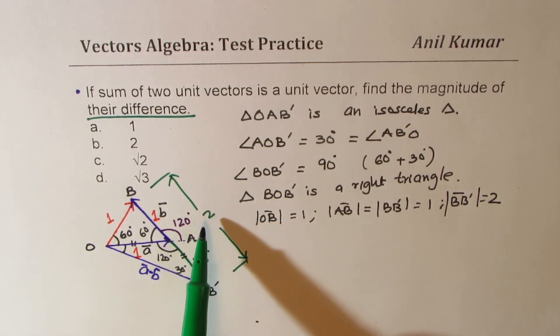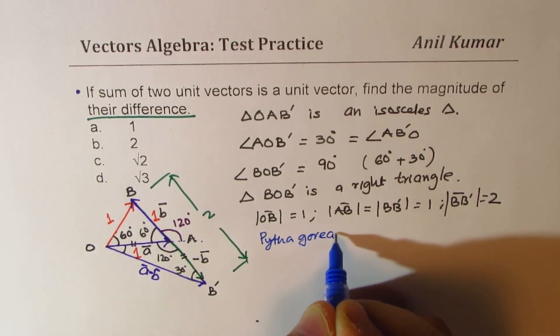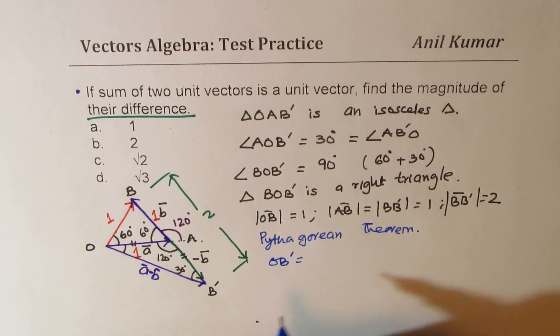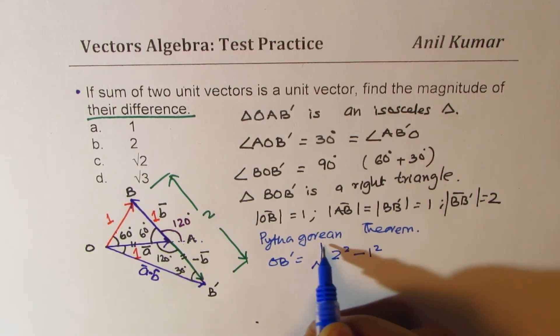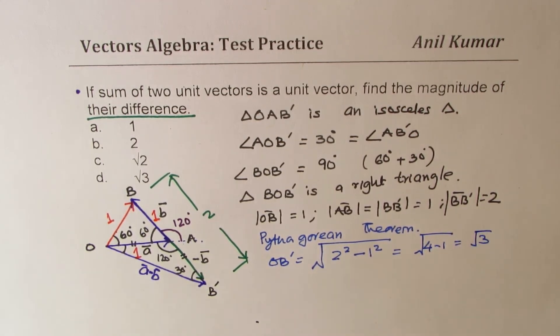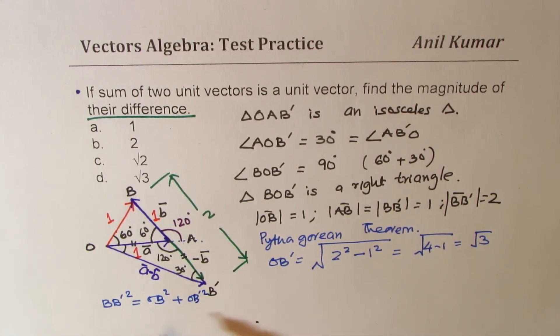2 is the hypotenuse of this right triangle. So from Pythagorean theorem, we can apply the Pythagorean theorem. And we can find that ob dash is really equal to square root of 2 square minus 1 square, which is square root of 4 minus 1, which is square root of 3. Is that clear? Since in a right triangle, we know b, b dash square is equal to ob square plus ob dash square. That is from Pythagorean theorem.